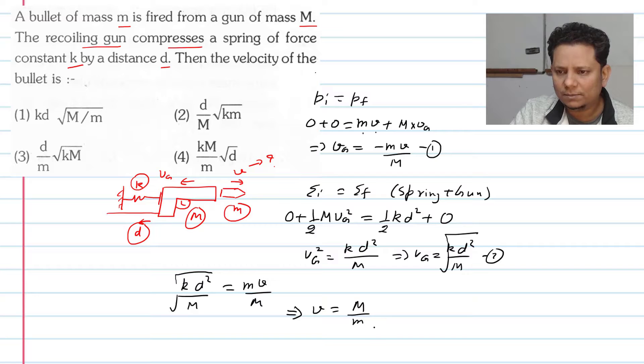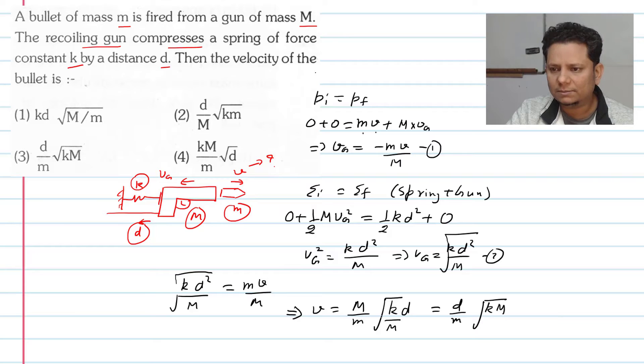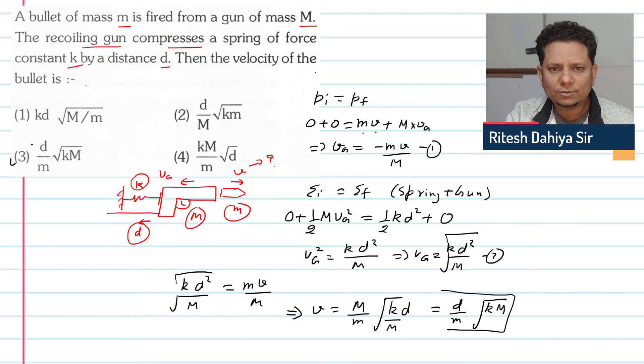Which implies aapka velocity is ki jo main value that will be equal to M divided by small m multiplied by K D. d ko am chahi toh baha nikala saktay K D divided by M or is M ko inside layate so yya value ho jayegi D divided by small m multiplied by yya ho jayega aapka K M. All right, yya M jake M square bane ga M cancel ho jayega, so this will be our final velocity. So based on this haam kaya saktayin ka option no.3 D by M under root K M would be the right answer. I hope yya solution aapko samaj me aaya.